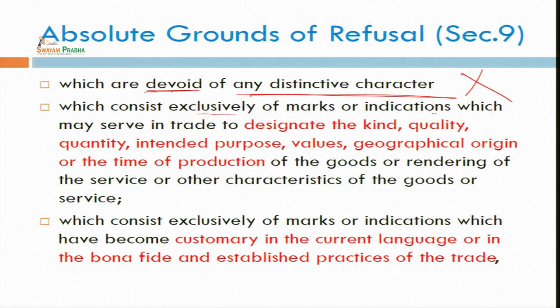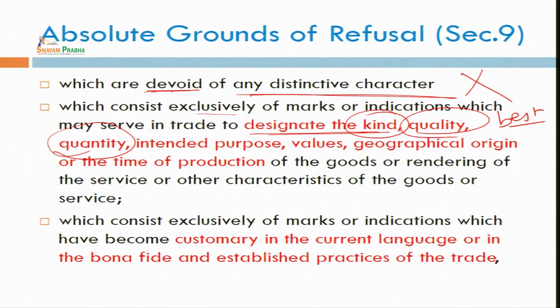A mark which exclusively indicates the kind, quality, or intended purpose of goods will be refused. For example, you cannot register a word like 'best' or 'excellent' — that will be refused by Section 9. Similarly, quantity or intended purpose — if the purpose is 'light' or 'surya,' you cannot go for registration of that word. Geographical indications are also debarred under this trademark act — a separate GI Act was passed in 1999. You cannot register a city name for particular goods and services.